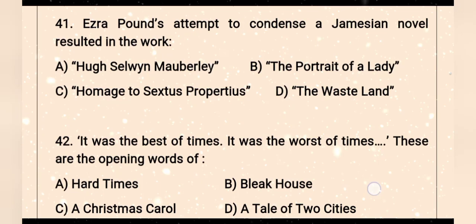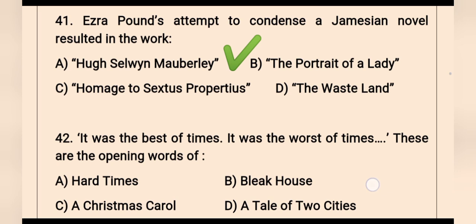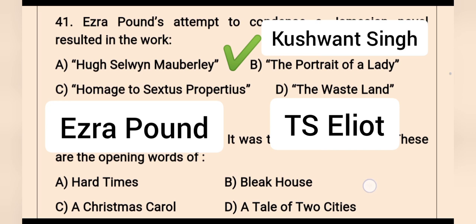Question 41: Ezra Pound's attempt to condense a Jamesian novel resulted in the work — the right option is Hugh Selwyn Mauberley. Hugh Selwyn Mauberley was published in 1920 and is a long poem written by Ezra Pound. The Portrait of a Lady is a poem by Kushwant Singh, and Homage to Sextus Propertius is a book by Ezra Pound.